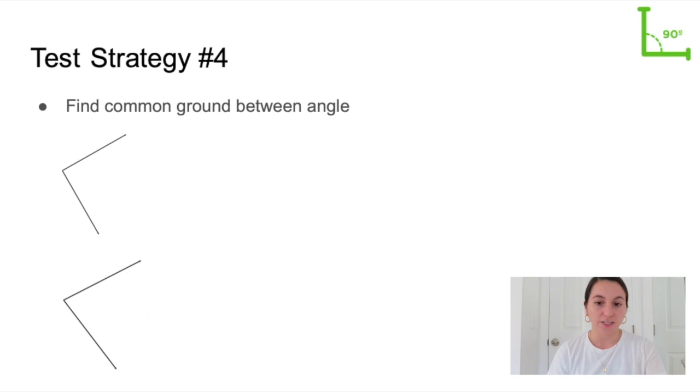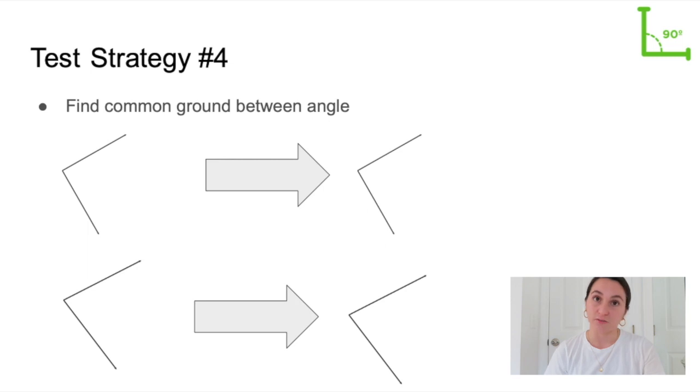You can see by looking at the bottom line segments of both angles that the bottom angle is slightly smaller than the top angle. By finding something common you can easily see what the difference is between the two angles. Sometimes the difference between the angles is so slight so anything to help find the difference can be helpful.